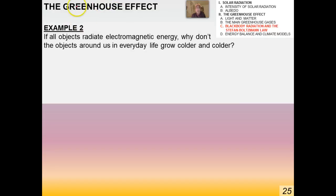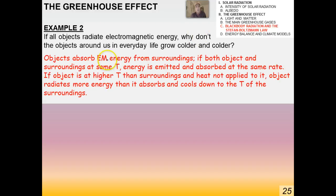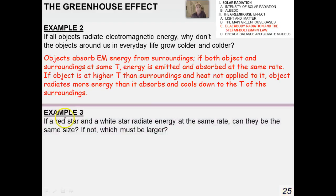Here's a qualitative example: if all objects radiate EM energy, why don't the objects around us in everyday life grow colder and colder? It turns out that objects absorb energy from their surroundings. If both the object and the surroundings are at the same temperature, energy is emitted and absorbed at the same rate. If the object is hotter and no heat is applied, the object radiates more energy than it absorbs and cools down to the temperature of the surroundings. In a way, that's conservation of energy.